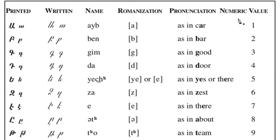The numeric system consists in assigning the first nine letters of the alphabet to units, the second nine to tens, the third nine to hundreds, and the last nine to thousands. So from one to nine: